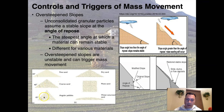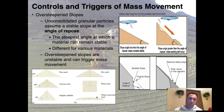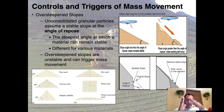Those values assume dry material — dry fine sand, dry coarse sand, dry angular pebbles. But water plays a major role in the cohesion of these particles. If the slope angle is less than the angle of repose, even if it rains, as long as it doesn't hit saturation the slope will remain stable and won't fail. But if the angle is greater than the angle of repose — the stable angle at which everything works — mass wasting will occur and there will be a landslide.